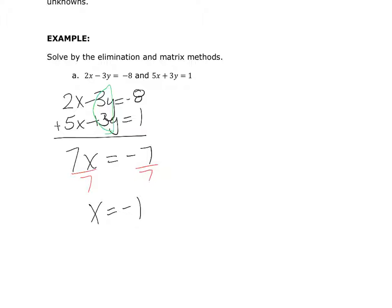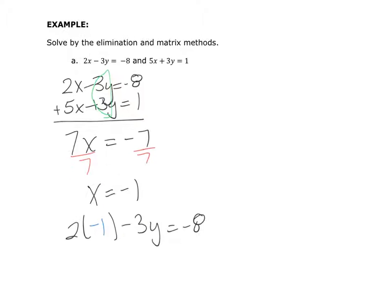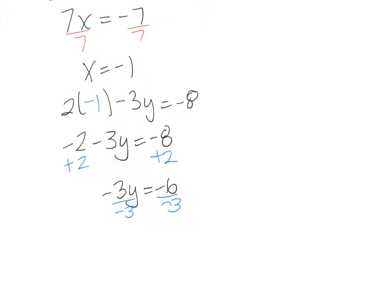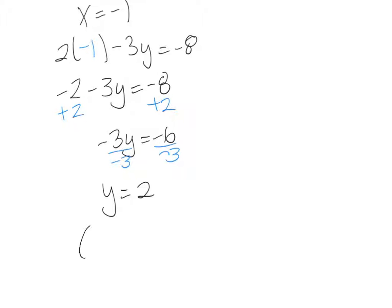We have x equals negative 1, but since it's a system, we need to find the y value — we're asking where do these linear equations cross. So I substitute x equals negative 1 into the first equation: 2 times negative 1 minus 3y equals negative 8, which gives negative 2 minus 3y equals negative 8. Adding 2 to both sides gives negative 3y equals negative 6; dividing by negative 3 gives y equals 2. The ordered pair answer is (negative 1, 2).